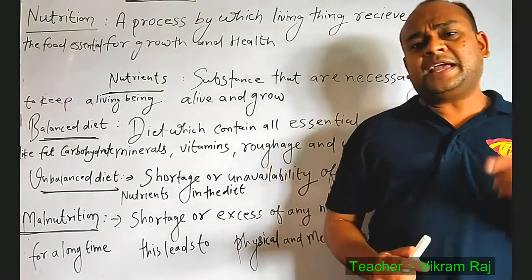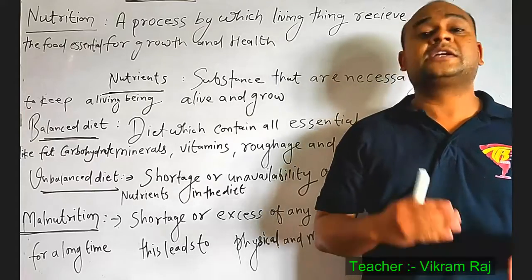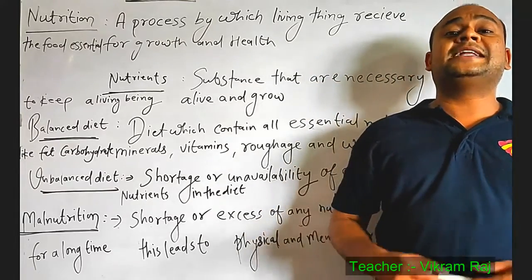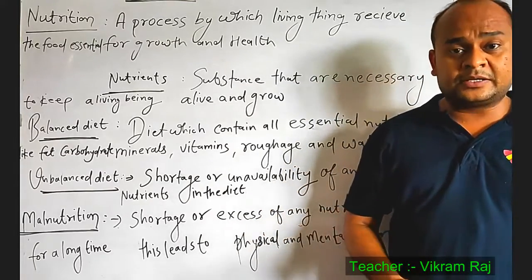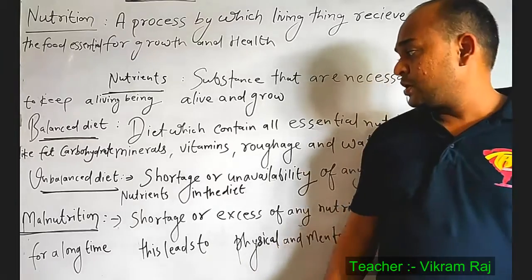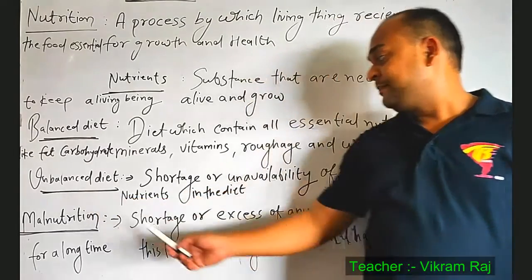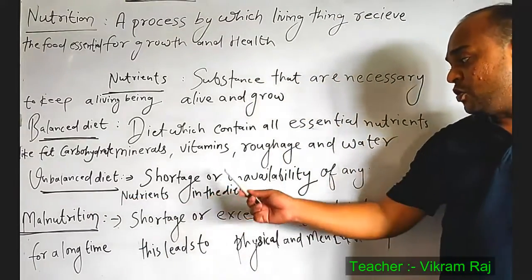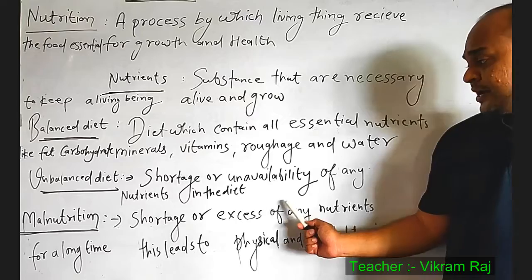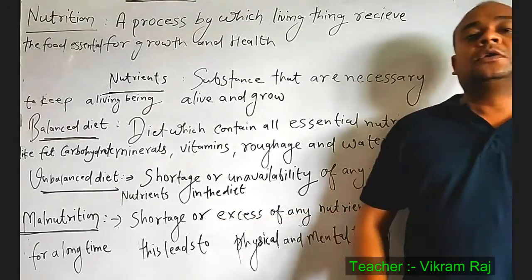If any one component is deficient or in excess, then the diet is said to be an unbalanced diet. Write the definition: shortage or unavailability of any nutrients in the diet.